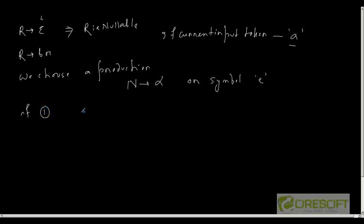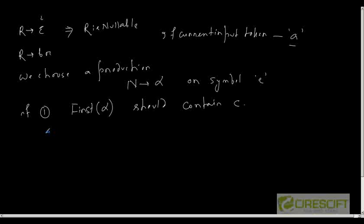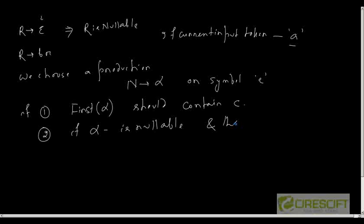The first condition is that FIRST(alpha) should contain c. Now if c does not belong to FIRST(alpha), we can still select N → alpha if alpha is nullable and the sequence after N can begin with c.